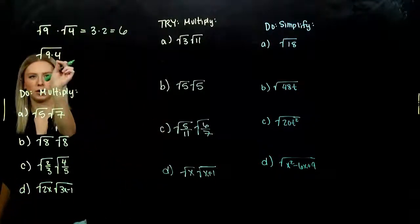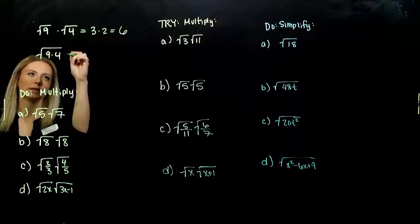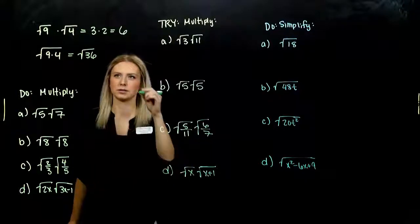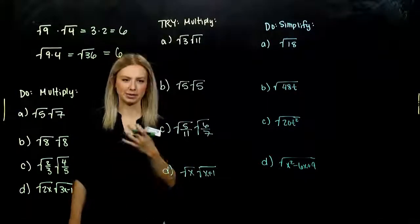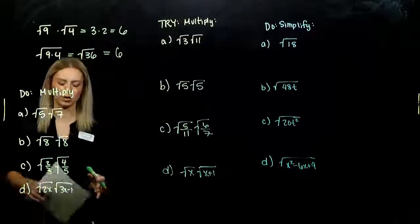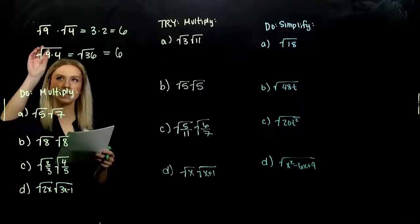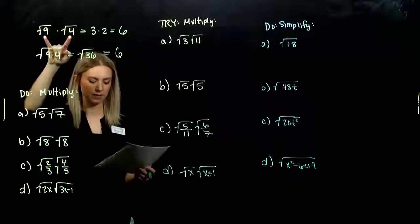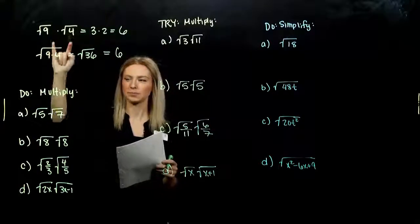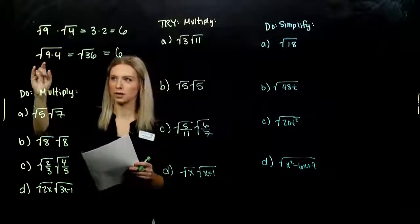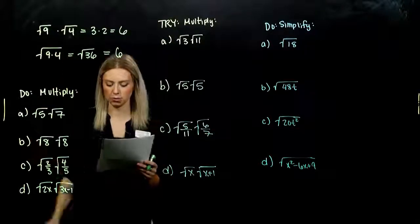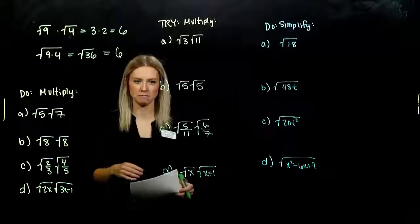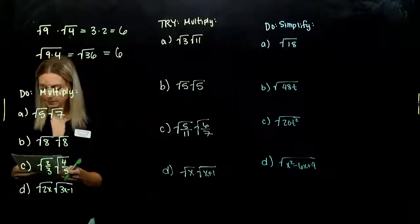Now let's see if we combine them underneath one radical. 9 times 4 is 36, and the square root of 36 is also 6. This tells us that if we have non-negative radicands — either 0 or positive — we can combine the multiplication underneath one root. Sometimes it's helpful to do that; sometimes it's helpful to evaluate them individually. It's just whatever is going to benefit us more.